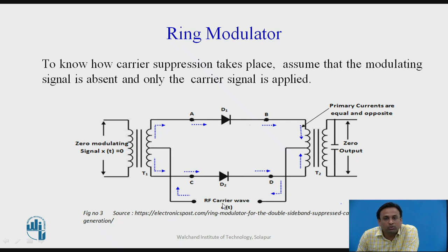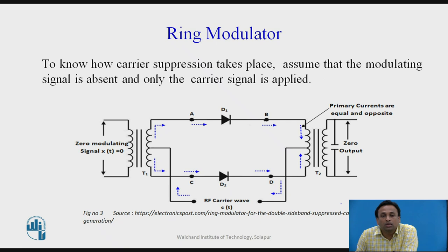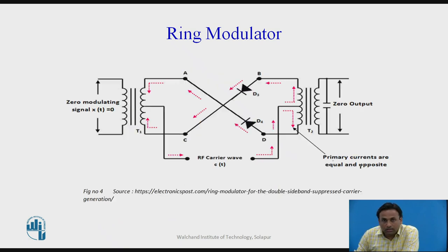To understand carrier suppression, assume the modulating signal is absent and only the carrier signal is applied. During the positive half cycle of the carrier, the current flows such that diodes D1 and D2 are forward biased and D3 and D4 are reverse biased. The currents through D1 and D2 are equal and opposite in direction in the primary, so the magnetic fluxes cancel each other, producing zero output — this is how the carrier is suppressed.